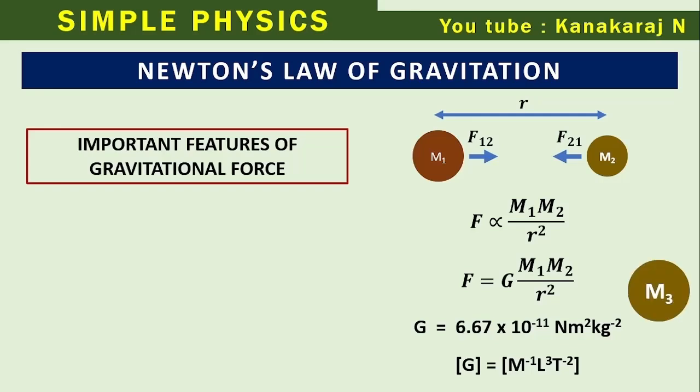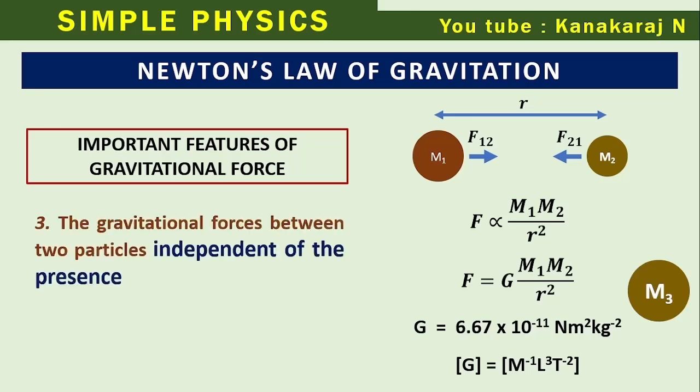We have another mass, M3. The gravitational forces between two particles is independent of the presence or absence of other particles. The F12 or F21 are not affected by the presence or absence of M3. The total force on M1 or M2 is affected because of the presence of M3. But F12 is not affected by M3 or F21 is not affected by M3.